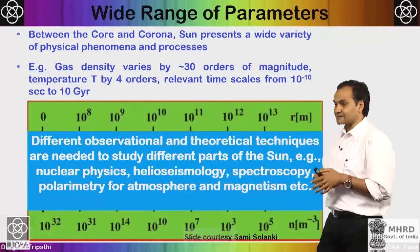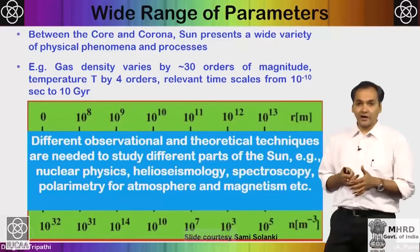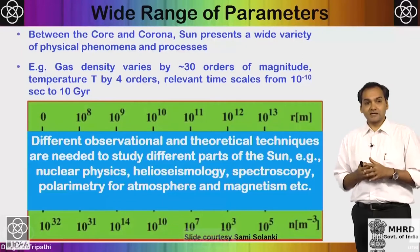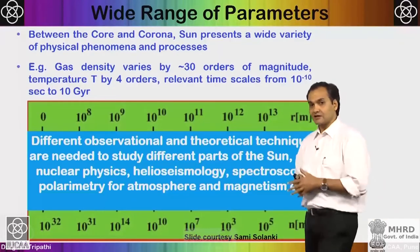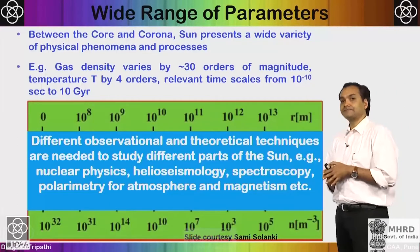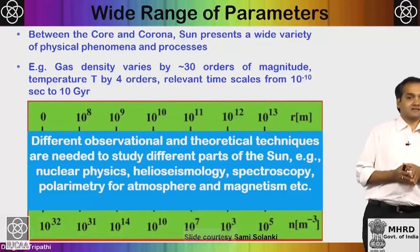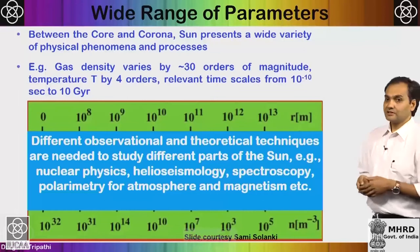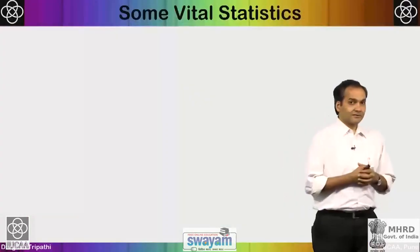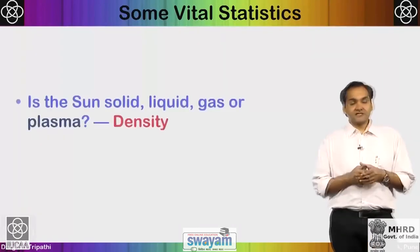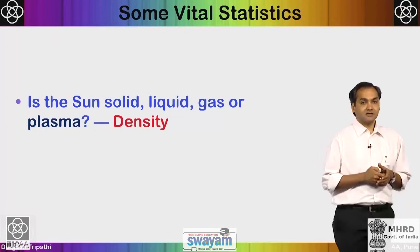Because physics at different scales requires different techniques, understanding the sun's atmosphere, solar wind, and heliosphere requires applying different observational and theoretical techniques such as nuclear physics, helioseismology, spectroscopy, and polarimetry. Now let us look at some vital statistics. The first question: is the sun solid, liquid, gas, or plasma?